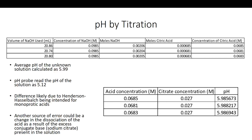Here are the results of our titrations and our final pH calculation, including the citrate concentration given by our conductivity section. We had our volume of NaOH used and our concentration from our standardization, which allowed us to find the moles of NaOH and convert that to a concentration of citric acid. Once we had the concentration of citric acid and the concentration of citrate, we plugged those into the Henderson-Hasselbalch equation and found our pHs. The average pH was 5.99 for our unknown solution.